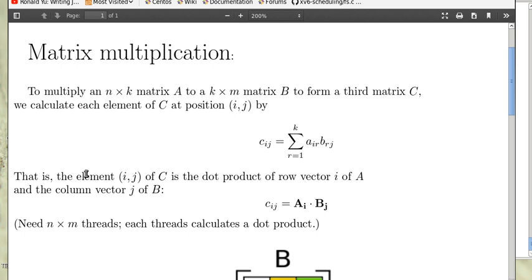That means the element (i,j) of C is the dot product of row vector i of A and the column vector j of B. So C_ij is equal to A_i dot B_j.